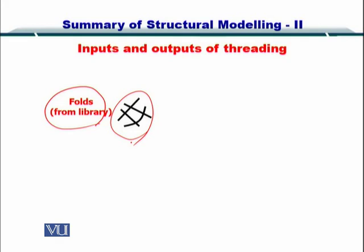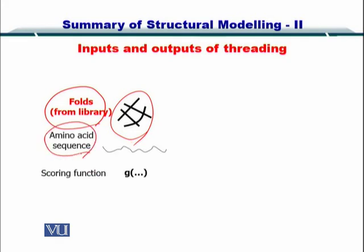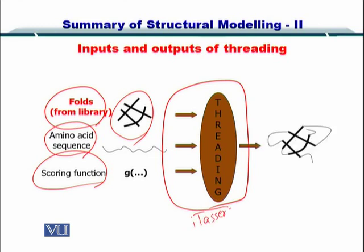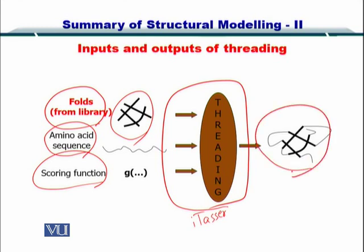A protein may have multiple folds of course. Here is your amino acid sequence, your scoring function, and all of that is put into the threading algorithm. You may know that the most common tool for threading is I-TASSER — you should go and use it sometime. The threading software then outputs the predicted structure.